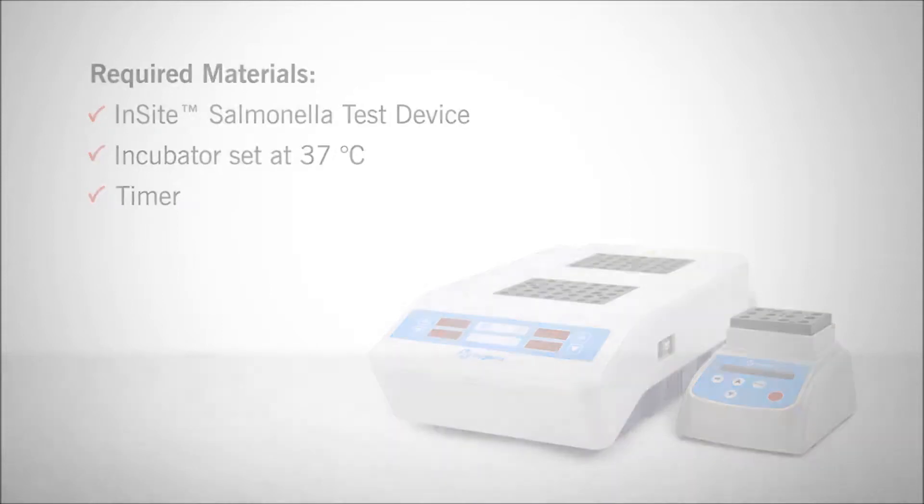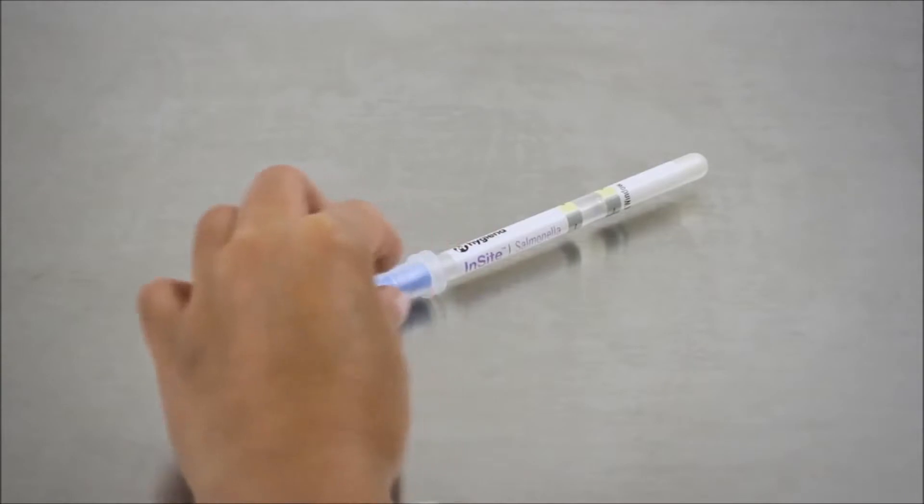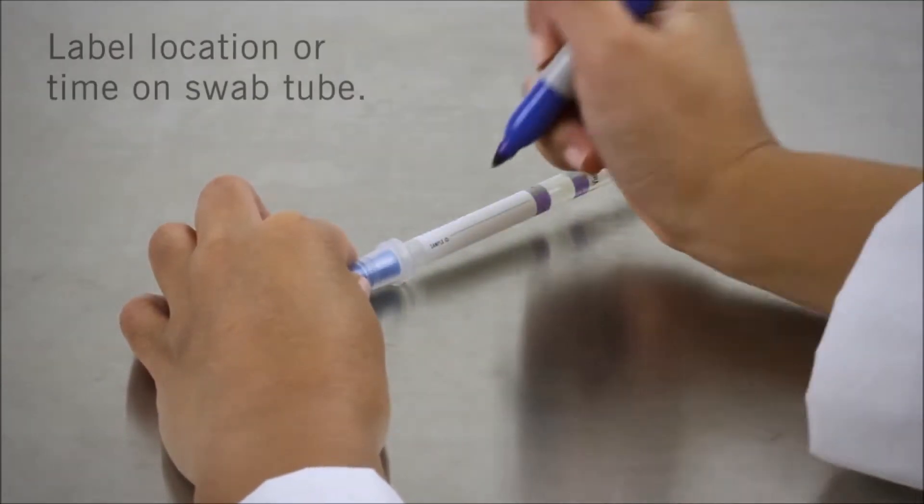Now let's get started. InSight is a two-step test. The first step is collection and pre-enrichment. You may choose to write the test location or time of the test on the label for easy identification.